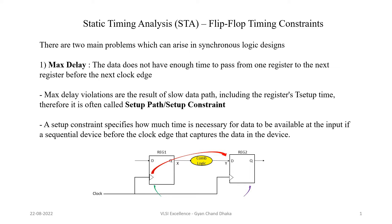As discussed in our previous chapter, the data at the capture flip-flop should be stable before the setup timing window — that means the data should arrive at the capture flip-flop at least before the setup time of the flip-flop. If the delay time is more, the data will take more time to reach the capture flip-flop and it will cause a setup violation. This problem is called the max delay problem.